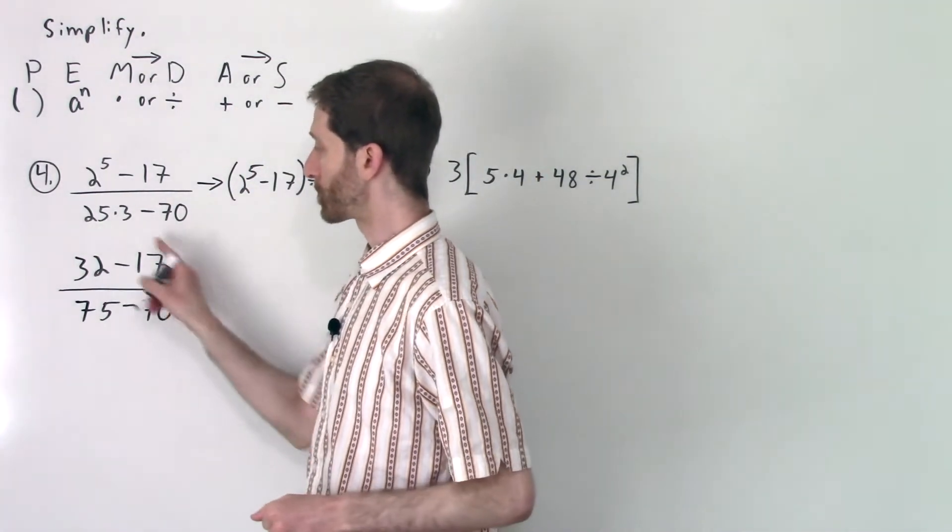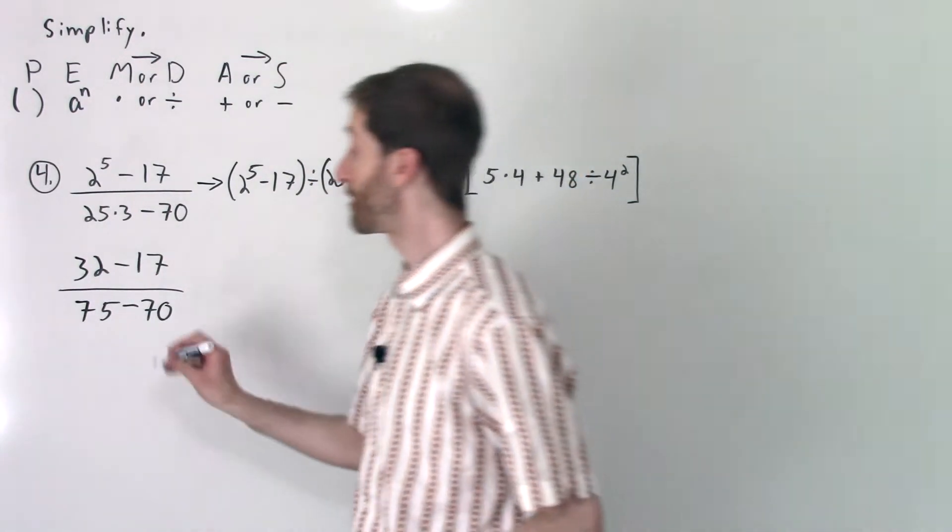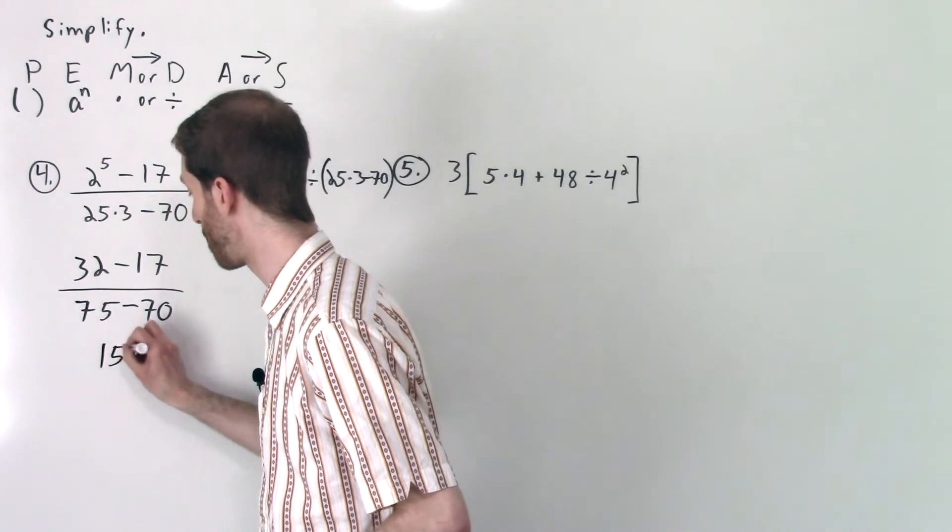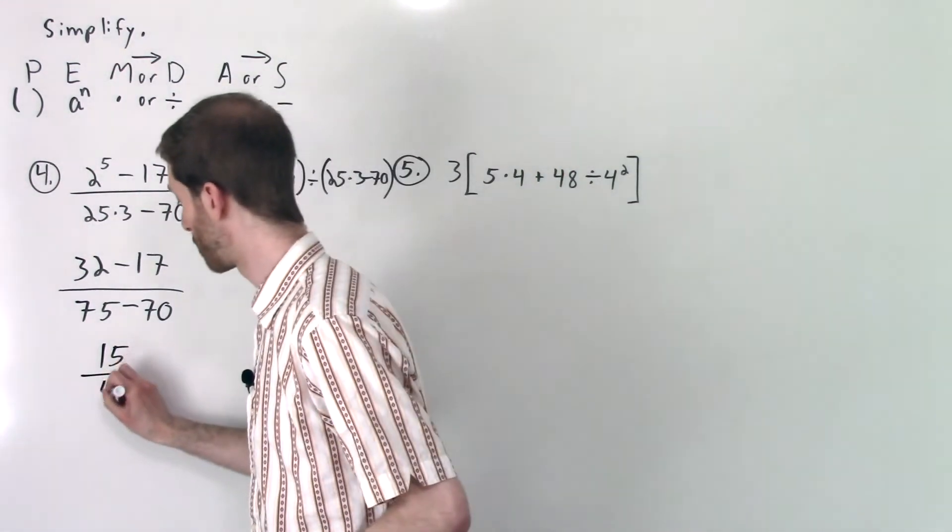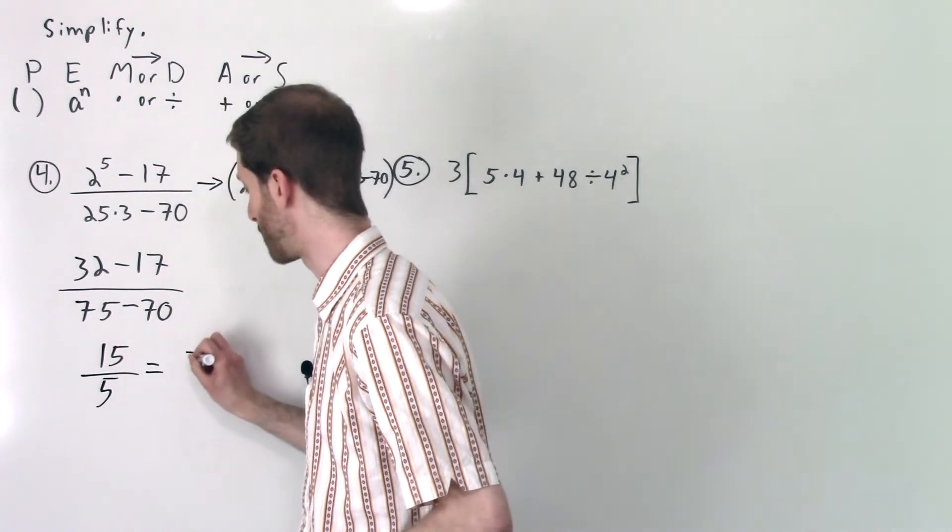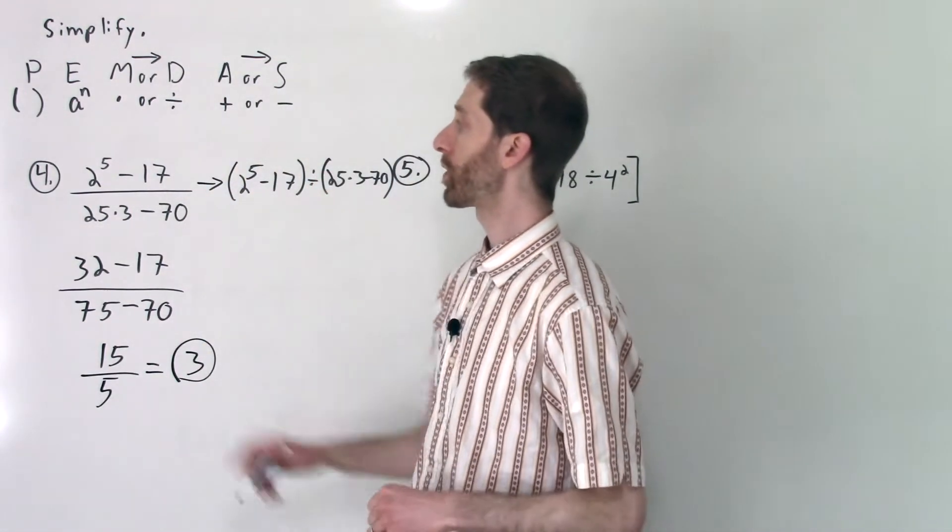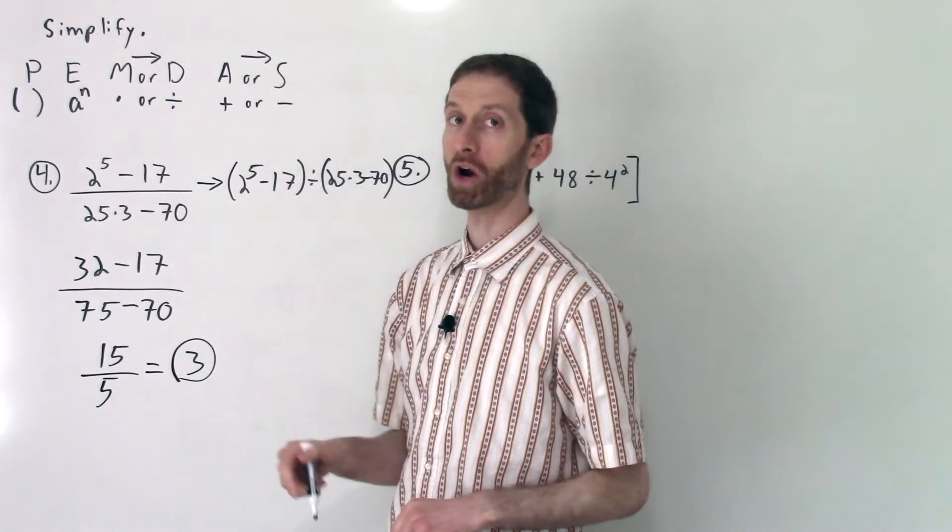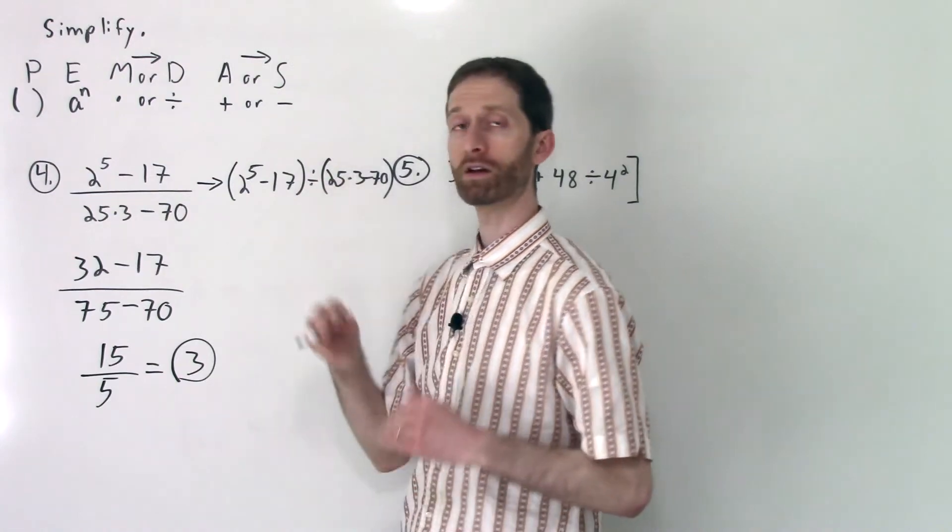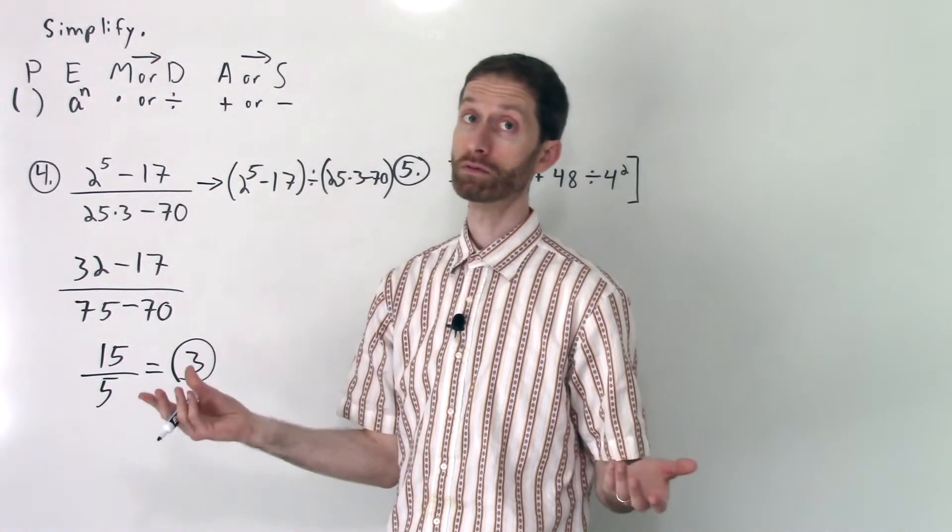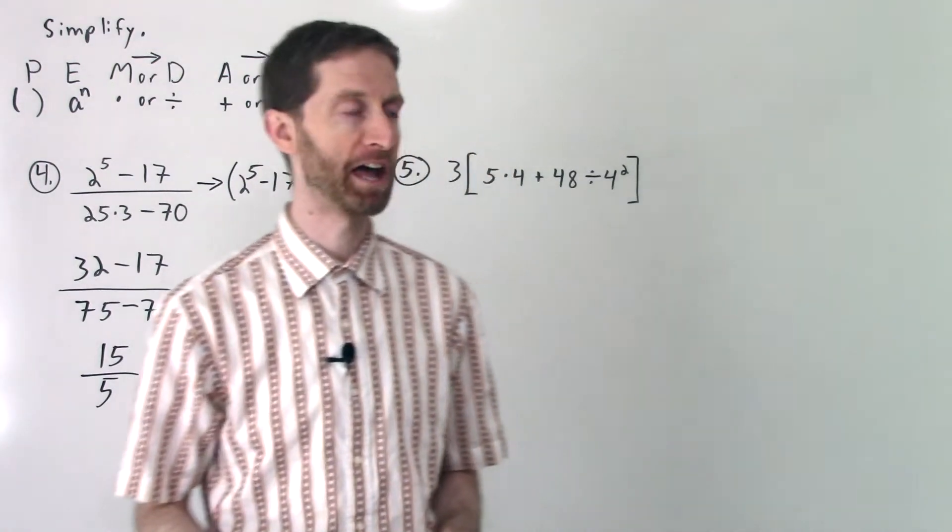We're keeping the numerator and denominator separate until we can simplify them further. So now I've got just subtraction in the numerator. 32 - 17 is 15. All over 75 - 70, which is 5. And 15 ÷ 5 is 3. That's our answer. So moral of the story, when you have a large fraction bar, you must treat it as if you've got a numerator and denominator that are each separate grouped parts. Don't treat it like that. It is that.